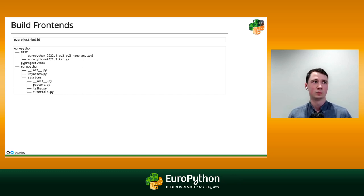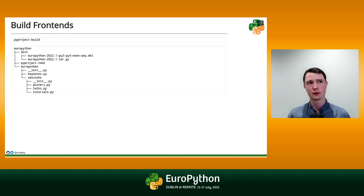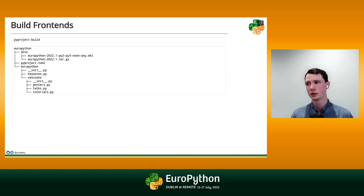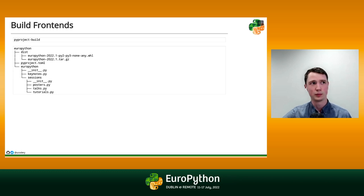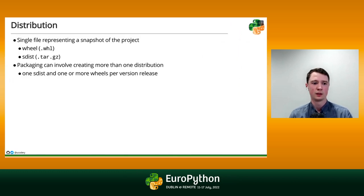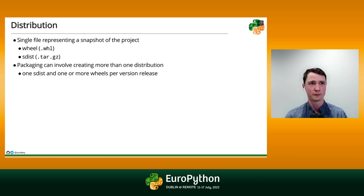We said originally that packaging is a process of turning a project into a distribution — that was a bit of a fuzzy definition. The process of packaging is actually turning a project into multiple distributions — one or more, in this case two. So each of those files is a distribution, and we made two of them with one build command. In Python we have two primary distribution formats: the wheel and the sdist — and build went ahead and created one of each for us.